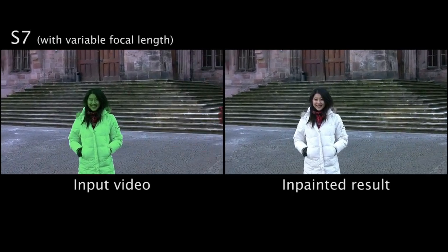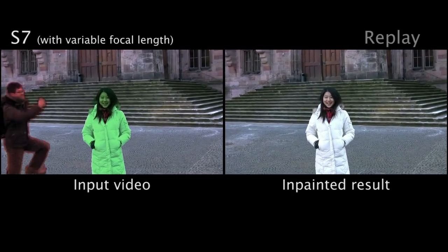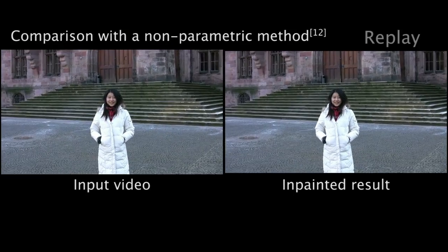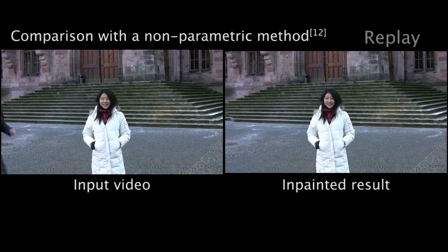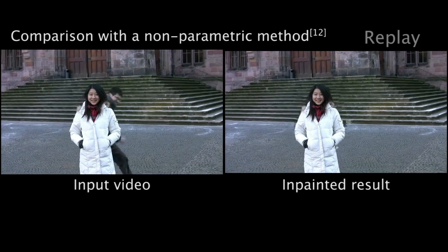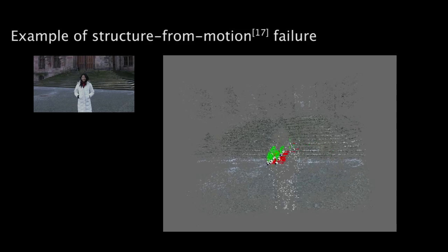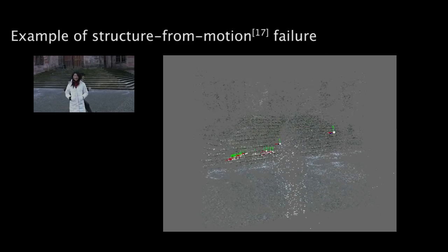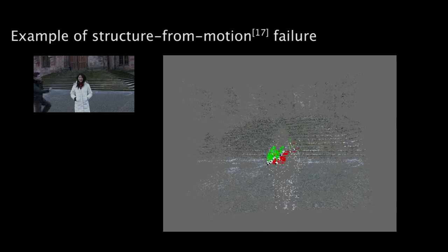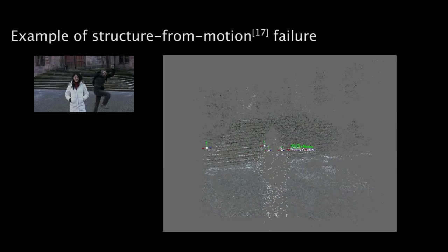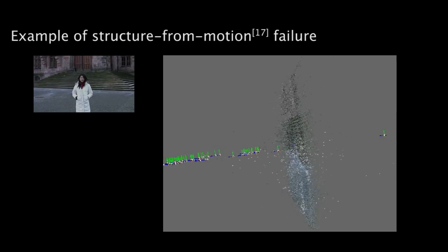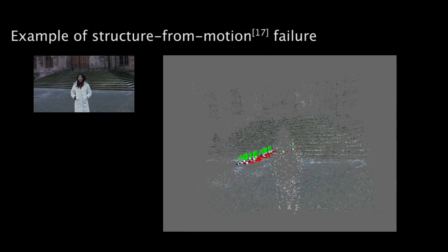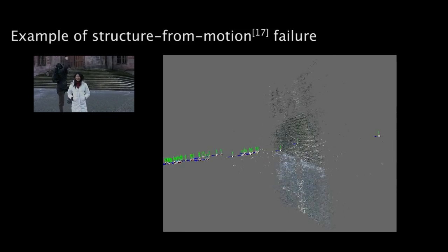The last sequence was captured with small camera motion and with a zoom into the person in the centre. For comparison, we inpaint this sequence using a non-parametric method which assumes a static camera. Despite the fact that the camera motion is small, these methods fail to produce geometrically consistent results. This sequence is also challenging for inpainting methods based on structure from motion and multi-view stereo. The narrow baseline and variable focal length makes it difficult to perform camera calibration, as exemplified by this failed reconstruction: only 60% of the cameras could be recovered, and the corresponding recovered structure is flat, with some cameras located behind the scene. Our method does not require a complete camera calibration, and for this reason it is not affected by these limitations.